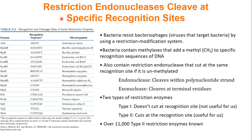Here is a table of a few Type 2 restriction enzymes — we know over 11,000 of them. The naming scheme uses the organism they were found in; for example, ECO was found in E. coli. The letter indicates the strain — R for strain RY13 — and the Roman numeral indicates the order in which they were found. So ECO R1, ECO R2, and ECO R5 are the first, second, and fifth ones found. The arrows in the table show where the physical cutting happens in the sequence.